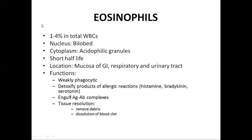Eosinophils have a count of 1 to 4 percent, a bilobed nucleus, and their cytoplasm contains acidophilic granules. When stained with Leishman stain, eosinophils take up a red (acidophilic) dye. They have a shorter half-life and are mostly located in the mucosa of the gastrointestinal tract, respiratory tract, and urinary tract.